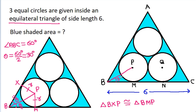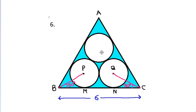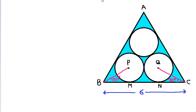So this angle will be 30 degrees. And if we join CQ, then again this angle will be 30 degrees. Now, if we join PM and QN, then in any circle the radius is perpendicular to the tangent, so these angles will be 90 degrees.